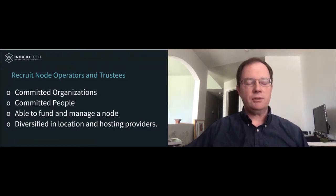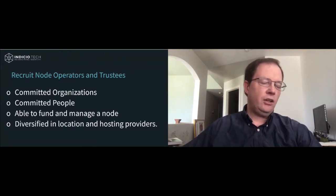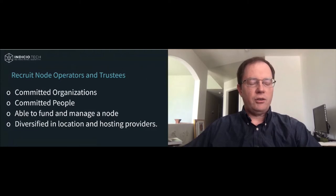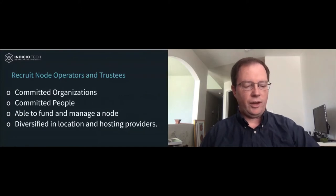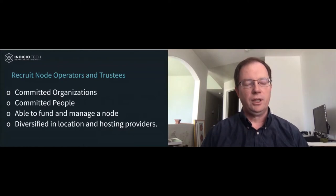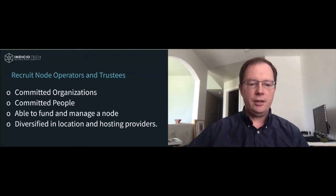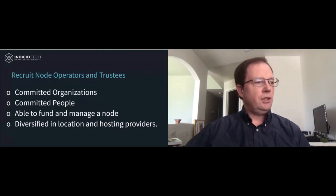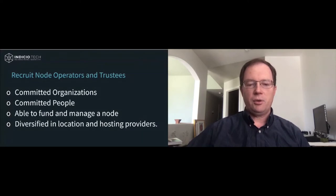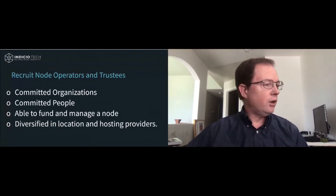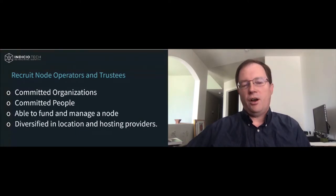Later on you can add more node operators. I don't like giving them a special designation like 'genesis stewards' — call them founding stewards or founding node operators if you want, but once the network is instantiated all nodes look the same to anyone connecting. It's also a good idea, especially for a public network, to have organizations from different locations using different hosting providers. If everyone is on AWS, for example, and AWS decides to disallow nodes, your whole network could be gone.